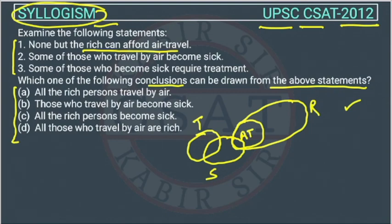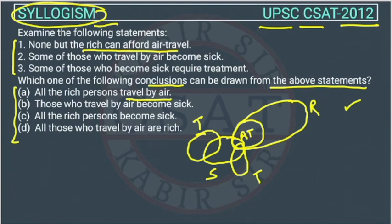The Venn diagram for treatment can also be placed elsewhere — this is also possible. Now let us check the conclusions. Conclusion A: all the rich persons travel by air. Looking at the diagram, only the air travel circle is inside rich — the remaining rich people are not traveling by air, so they travel by other modes. So this conclusion is wrong.